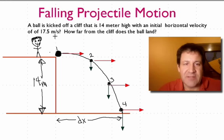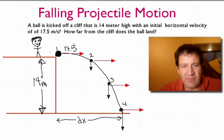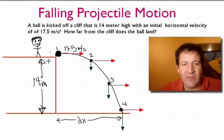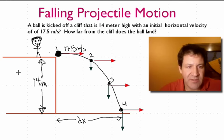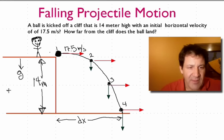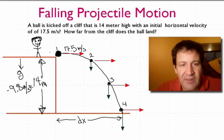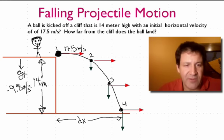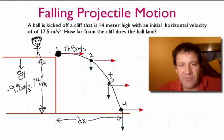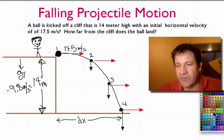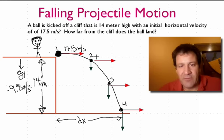The initial velocity in the horizontal direction is 17.5 meters per second — I drew this red vector to represent that. Over time, what happens to the speed in the horizontal direction? The only force acting on the ball once it leaves is gravity, acting downwards. There are no forces in the x direction, so all the horizontal velocity vectors are the same.